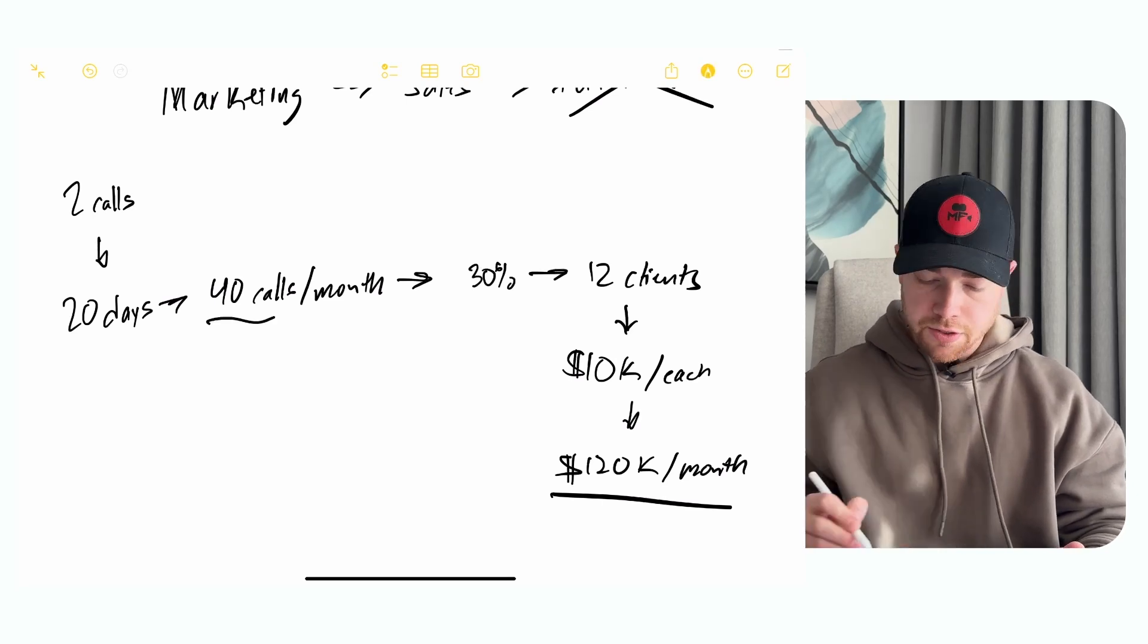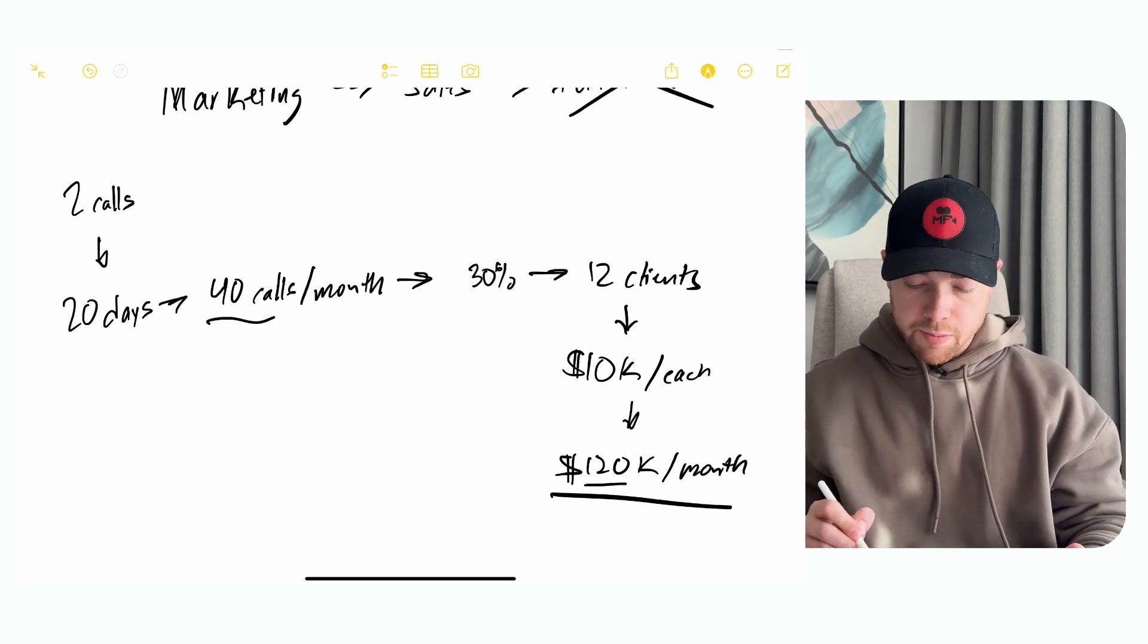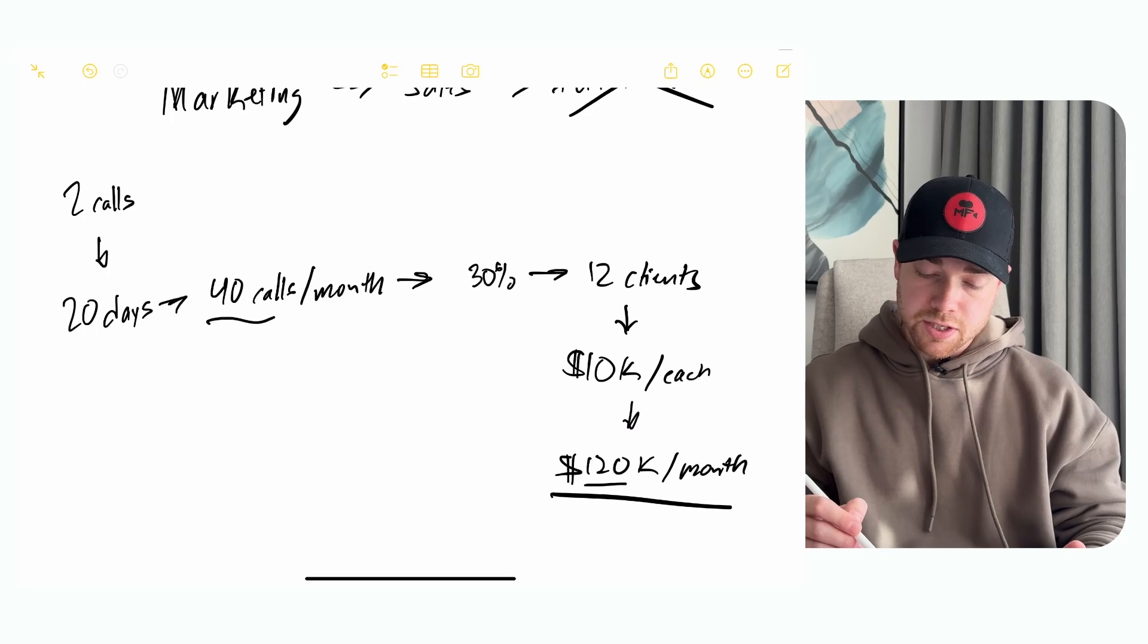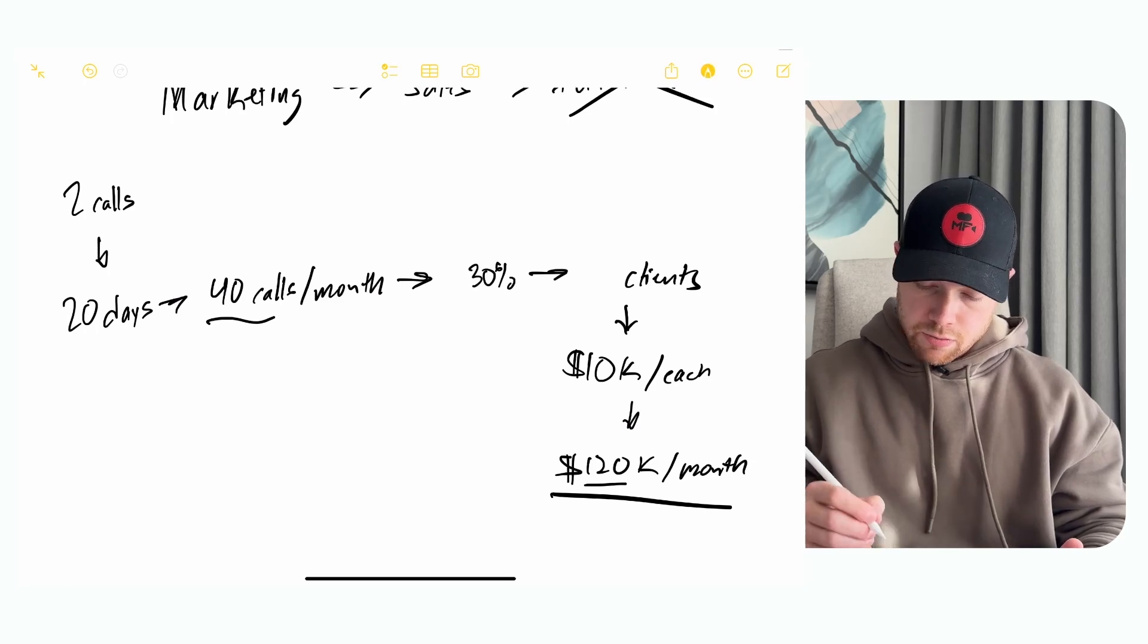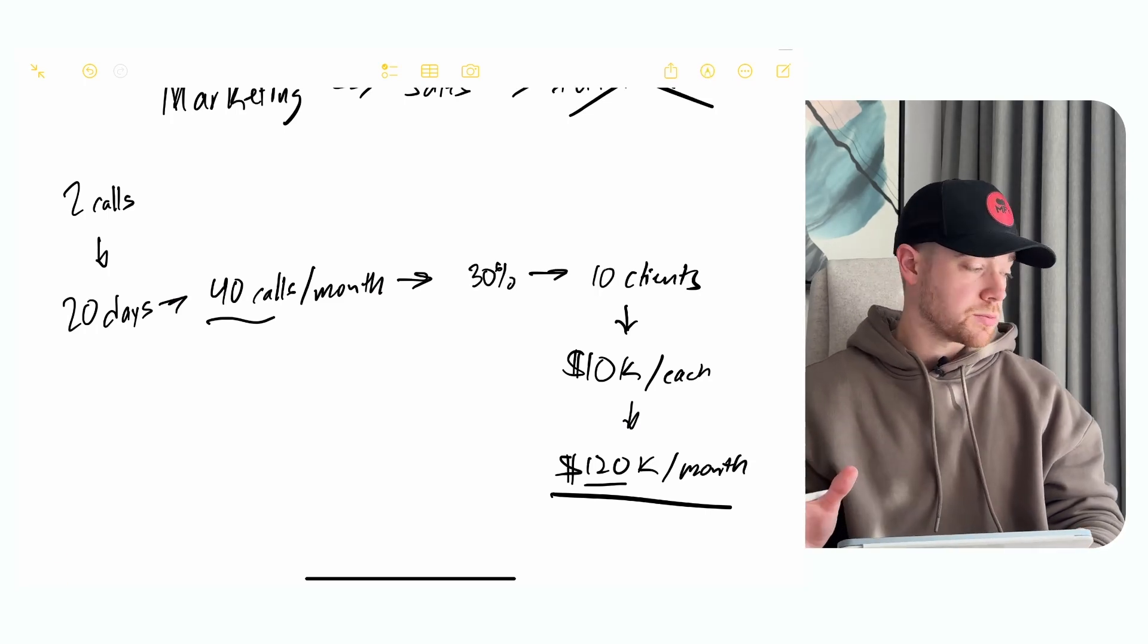Getting to $100,000 a month is not crazy. It just boils down to math and actually understanding the math behind it. So if I know I need 40 calls a month to hit 120K a month, let's say you only close instead of 12 clients, let's say you close 10 right here.